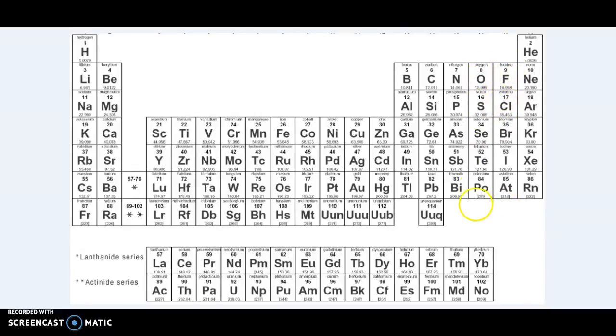These guys will all gain two electrons. So they'll all have a negative two charge. These guys will all have five electrons in the outside shell and will therefore gain three and become negative three.